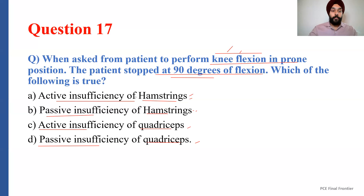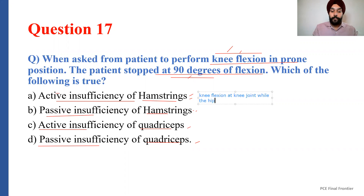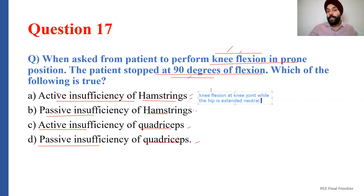The patient has the inability to perform knee flexion actively beyond 90 degrees. That means there may be some weakness of the hamstrings when the patient is unable to perform knee flexion at the knee joint while the hip is in a neutral extended position. We are doing a contraction of the movement, that's why the answer is active insufficiency. If we were trying to stretch something, then the answer would have been something about the quadriceps. Don't try to confuse passive and active. Mostly active insufficiency questions involve performing the movement yourself and the patient stopping at a particular motion.